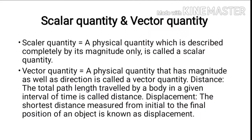Scalar Quantity and Vector Quantity. What is scalar quantity? A physical quantity which is described completely by its magnitude only is called scalar quantity. A physical quantity that has magnitude as well as direction is called vector quantity.